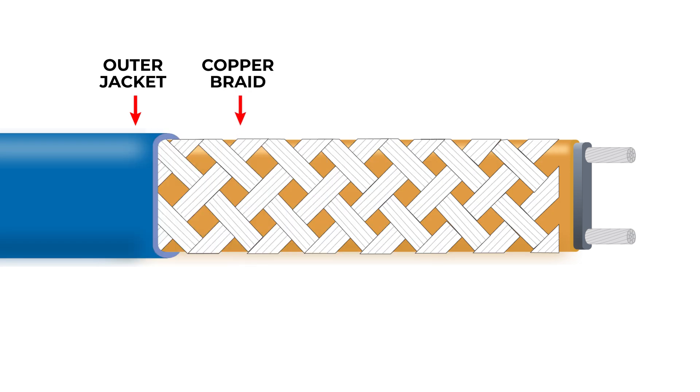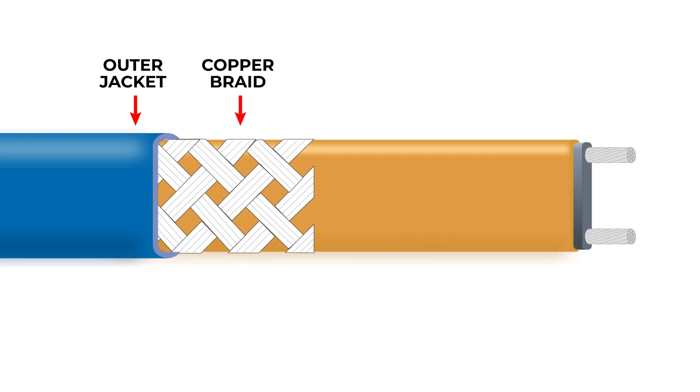Next is the inner flame retardant insulation jacket, and the last layer before we get down to the twin copper bus wires is the conductive core. This is where the self-regulating action occurs.